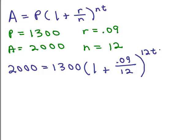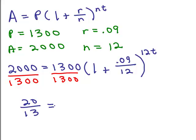That's the original part of the problem. Now from here, there's different ways you might simplify this. I'm going to start by simplifying inside parentheses and at the same time dividing both sides by 1300. If I divide both sides by 1300, I'm going to leave that as 20/13 on the left side.